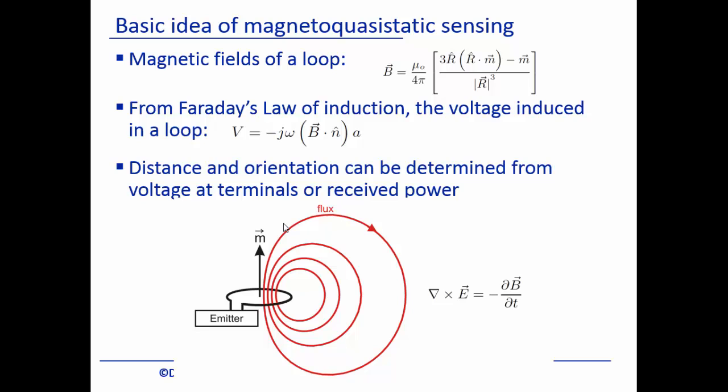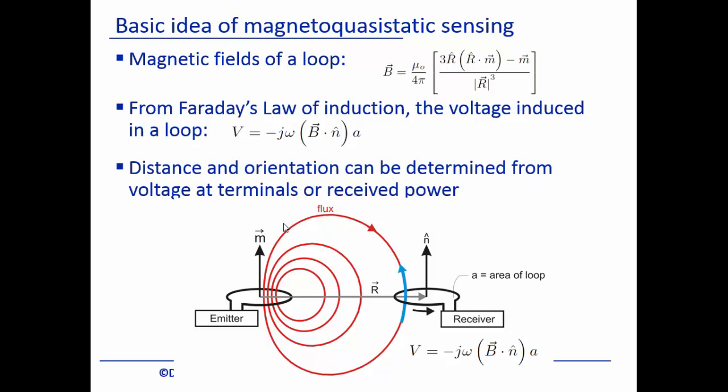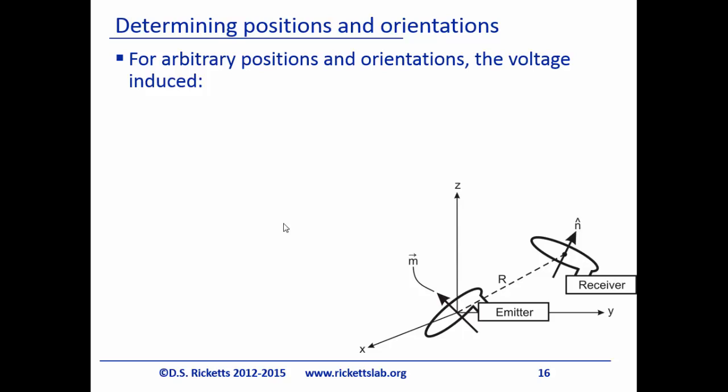Faraday's law lets us sense the magnetic field. We place a receiver with a loop — any magnetic field going through that loop creates a measurable voltage. The voltage is proportional to the magnetic field B and also to omega (frequency). That's the knob we play with: higher frequency gives higher voltage, but as we increase frequency the wavelength gets smaller, reducing the quasi-static range and the region where the body is transparent. So we have to carefully pick a frequency that maximizes signal while still operating in the quasi-static regime.